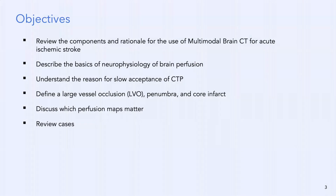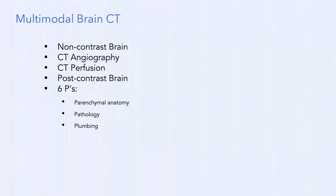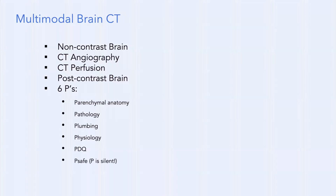Let's talk about which perfusion maps matter, and we're going to review a bunch of cases. What we do in CT for stroke is called a multimodal brain CT: the non-contrast brain, the CTA, the CT perfusion, and the post-contrast brain. This fulfills the six P's of imaging for acute stroke. You want to see the parenchymal anatomy, the pathology — because the clinical diagnosis of stroke is wrong approximately 13% of the time — look at the plumbing (the vessels), and the physiology to see what's ischemic and what's possibly dead. That's where we look at perfusion.